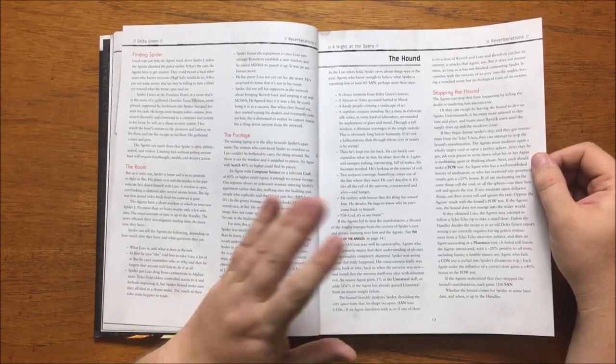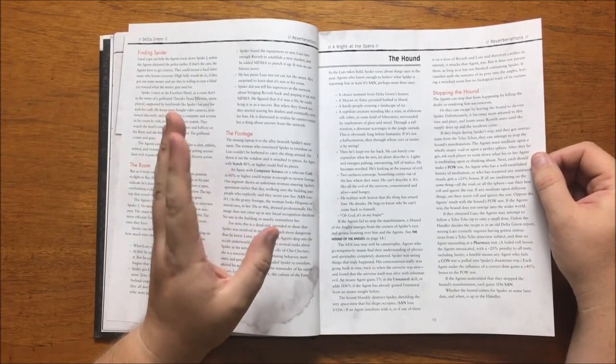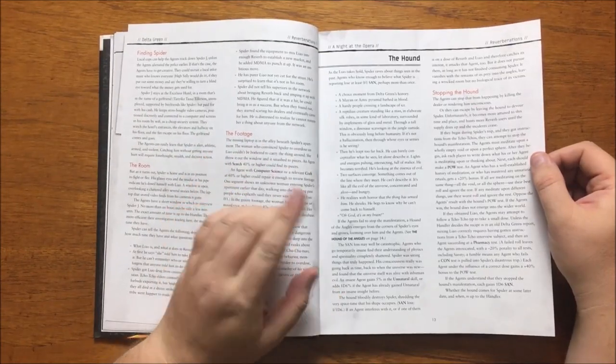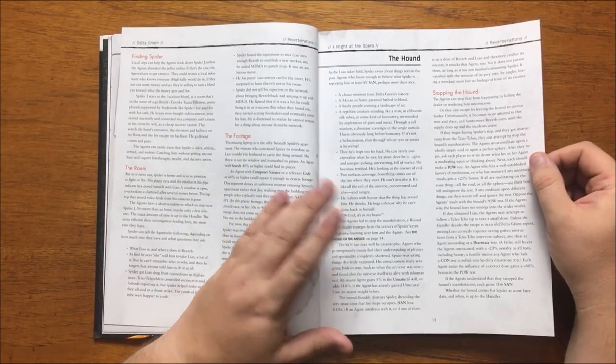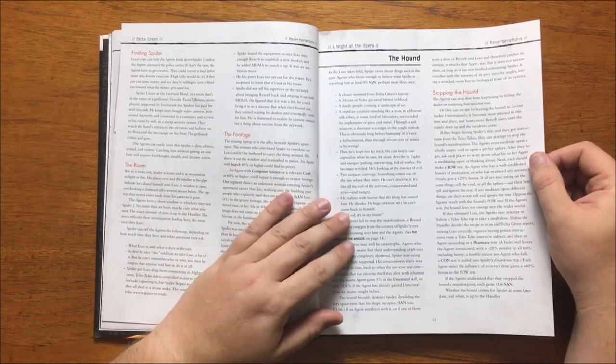The agents could stop the hound manifesting by meditating on a void or a perfect sphere as instructed by the Cho Cho but the success of that is down to the fall of the dice. If the agents have taken a small dose of Liao their chances of stopping it are increased.